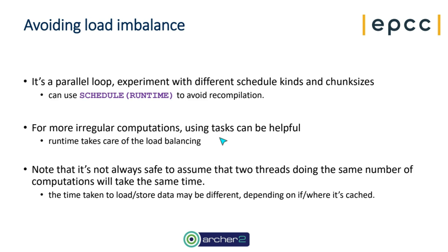If you specify schedule(runtime) in the code, you can set the schedule kind and chunk size as an environment variable, which allows you to experiment with different loop schedules without recompilation. For very irregular computations, using OpenMP tasks can be helpful as the runtime takes care of load balancing — particularly if you have nested parallelism with load imbalance at both levels of the nesting, where dealing with it using parallel loops alone can be very difficult.